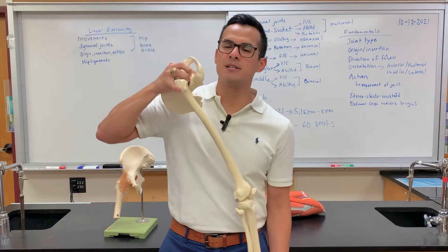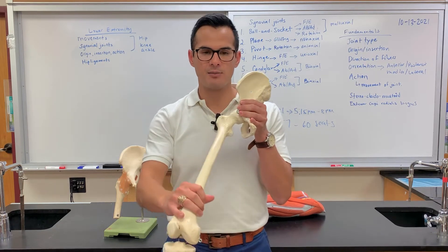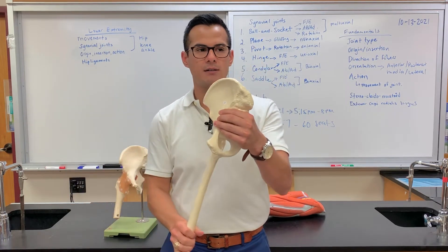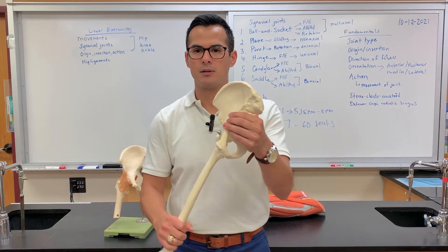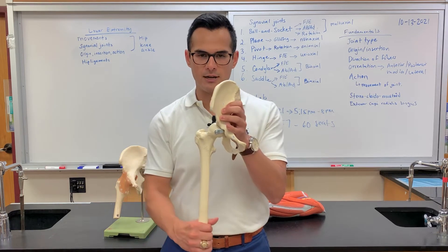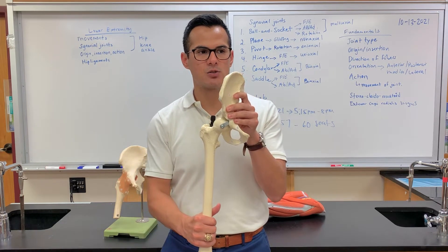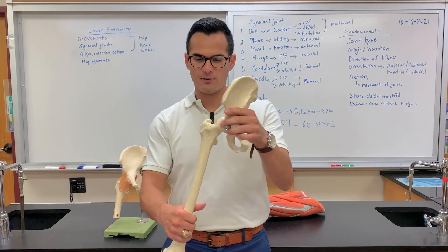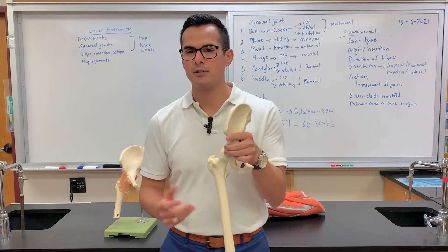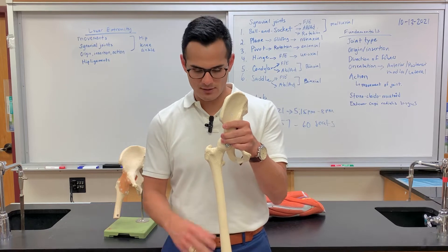Some of the movements at each of these different types of joints: for the ball and socket you have hip flexion, which is bringing it upwards, and then coming back down is hip extension. If you bring it to the side away from midline, that is abduction; adduction is towards midline. You also have rotation — medial rotation of the femur and lateral rotation, moving in this direction.